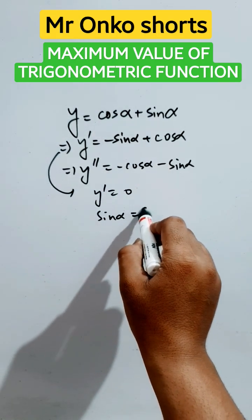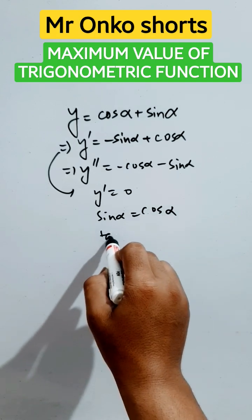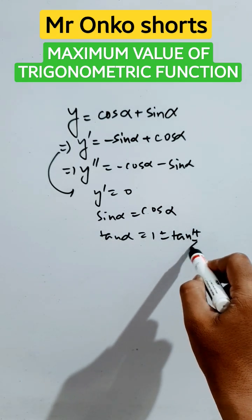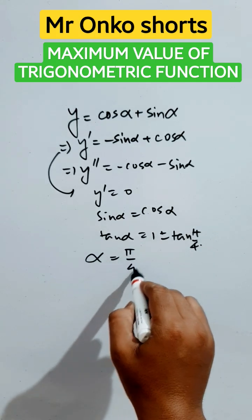So it will be sine alpha equals cos alpha. Ultimately, tan alpha equals 1. It can be written as tan of pi by 4. So alpha equals pi by 4.